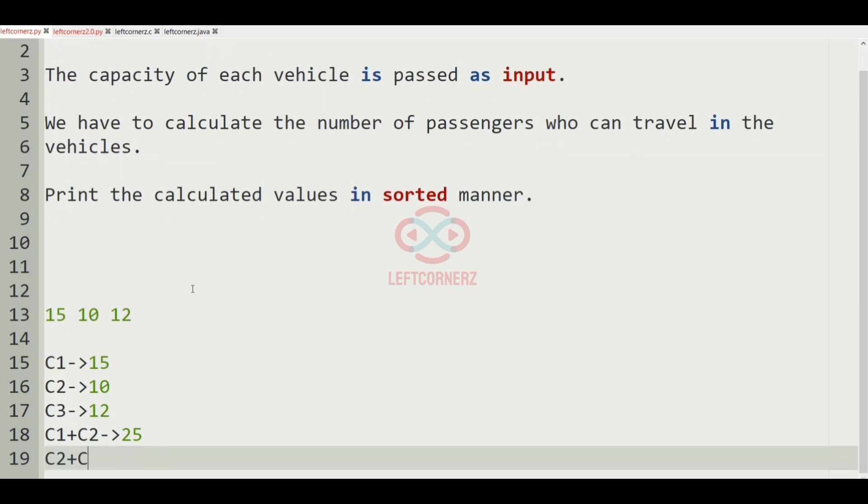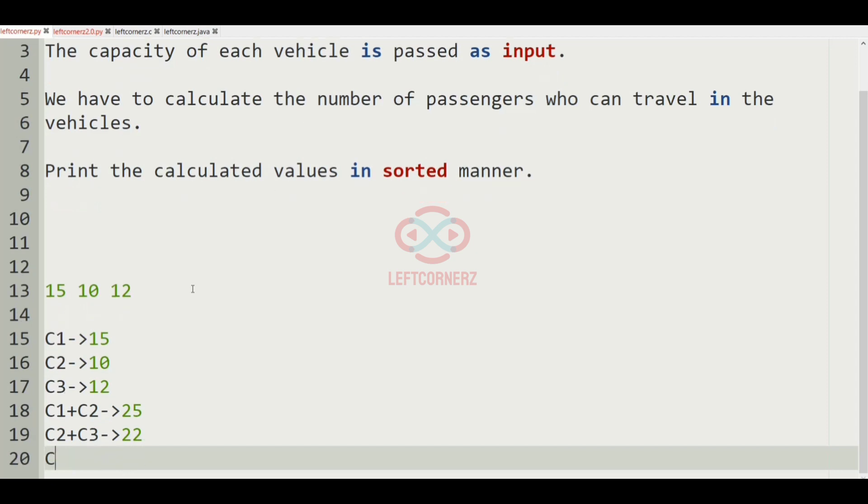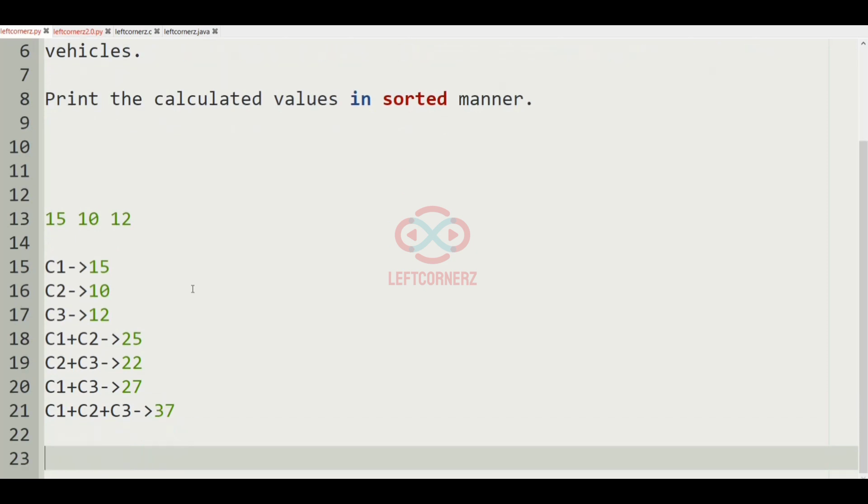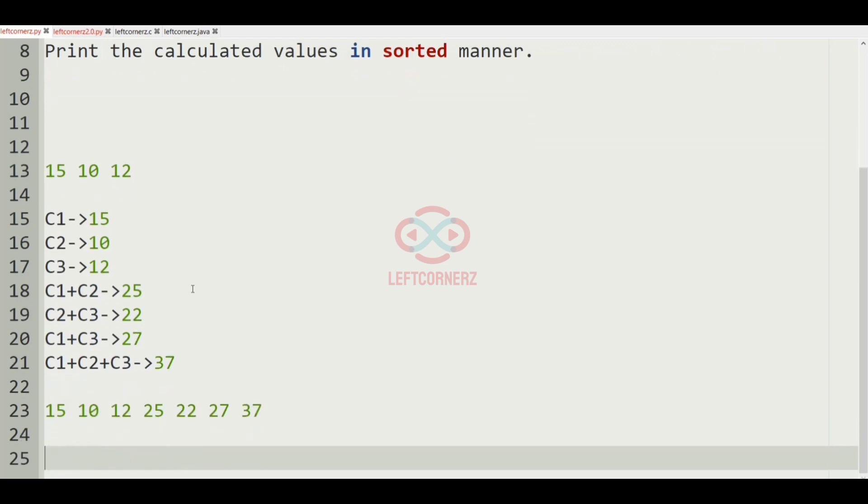So now C1 plus C2 gives 25, C2 plus C3 gives 22, C1 plus C3 gives 27, and C1 plus C2 plus C3 gives 37.